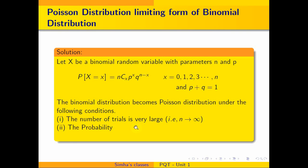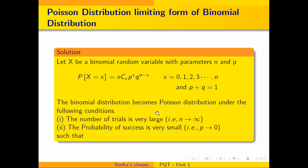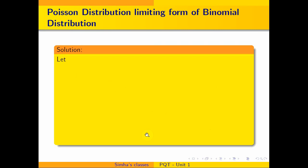The second condition is that the probability of success p is very small — that is, p tends to 0. Under these two conditions, I can obtain a Poisson distribution from the binomial distribution. When comparing the conditions, np is going to be a constant, such that np equals a constant lambda.